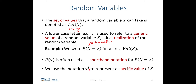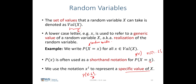We use the notation x^i to represent a specific value of x. For example, if X represents the random variable for a roll of the six-faced dice, writing p(X = 6) — where 6 is x^i — means we want the random variable to take that specific value from the possible outcomes.